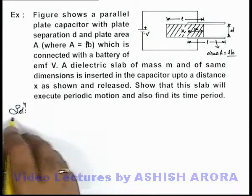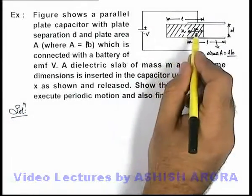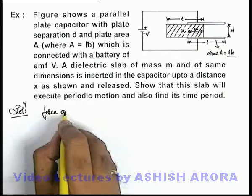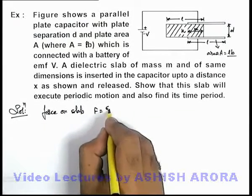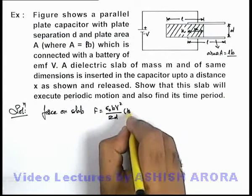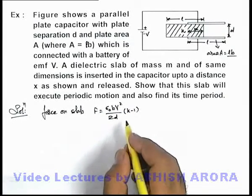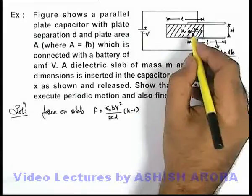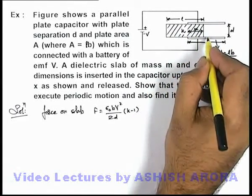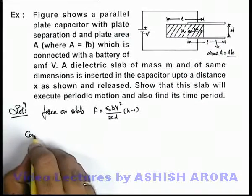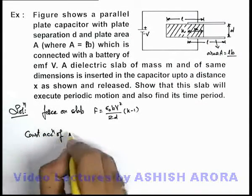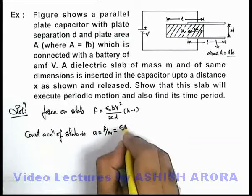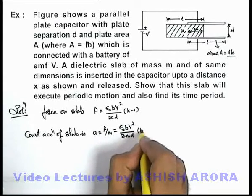In this solution, the very first thing we can recall is that whenever a dielectric slab is inserted in a capacitor which is connected to a battery, the force on the slab can be given as F equals ε₀bv² divided by 2d, multiplied by (k minus 1), as we studied in previous sections. We can see that the force is constant, so the slab will start moving inward between the plates with constant acceleration. The constant acceleration of the slab is a equals F by m, which gives ε₀bv²(k-1) divided by 2md.